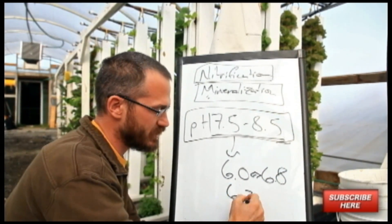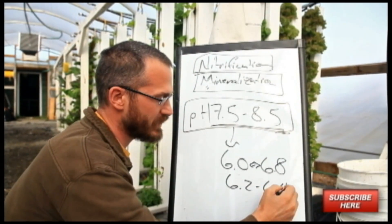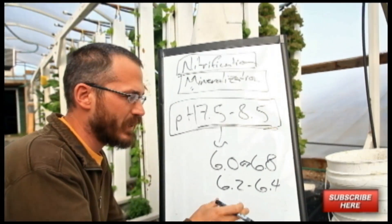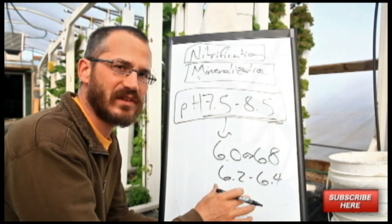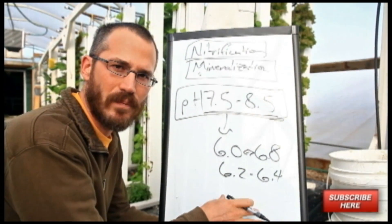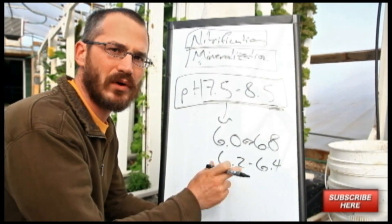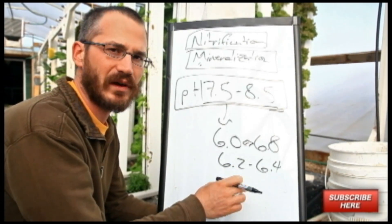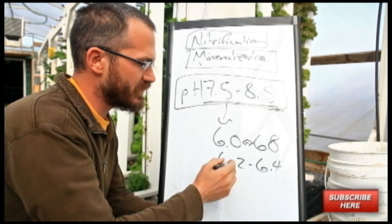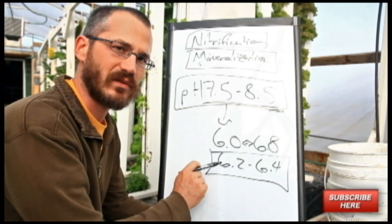This 6.2 to 6.4 range is best for nutrient availability in my experience and balancing the nitrification needs of the system as well as the ammonia-ammonium balance there. And this is the preferred range for most of my systems.